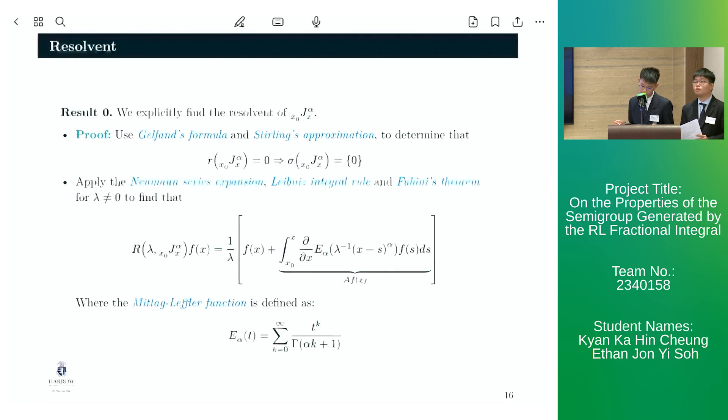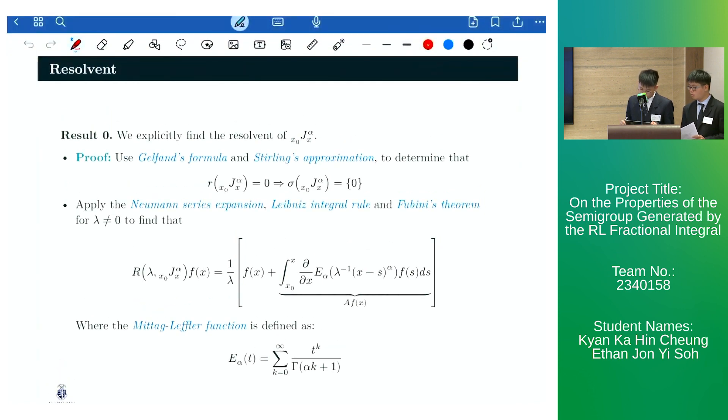which is to apply the Neumann series expansion, Leibniz integral rule, and Fubini's theorem to find that the resolvent operator of J alpha, when applied to a function f of x, results in this expansion, whereby we then denote an operator A, such that A of f of x is equal to this expression here.